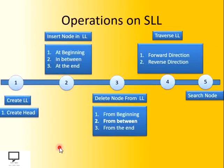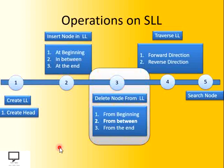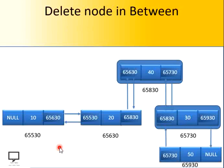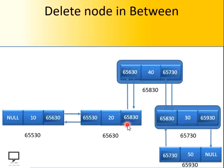Let's move forward for the next operation — deletion of a node from the in-between position. If I want to delete any in-between node, what steps are we supposed to follow? In-between means the beginning of the list and the end of the list are excluded. These three nodes are only the ones present at in-between positions that we can delete, because the deletion logic for beginning and end are different. The applicable nodes which I can delete in-between are node 20, node 40, and node 30 only.